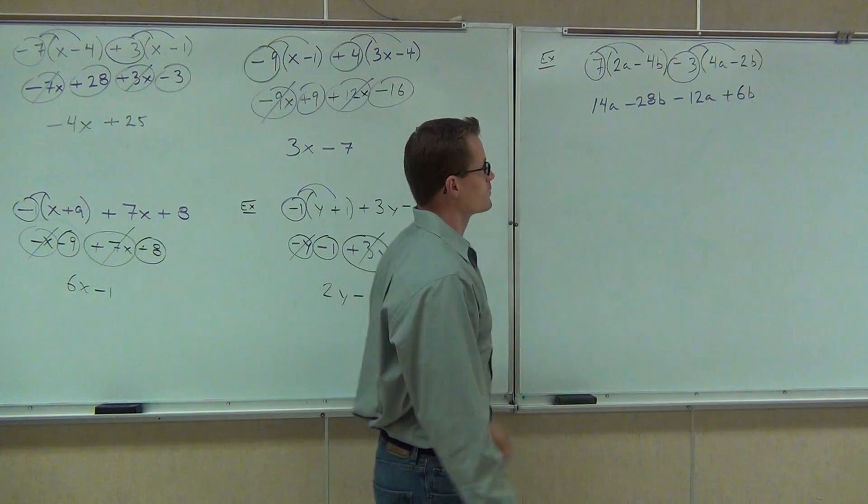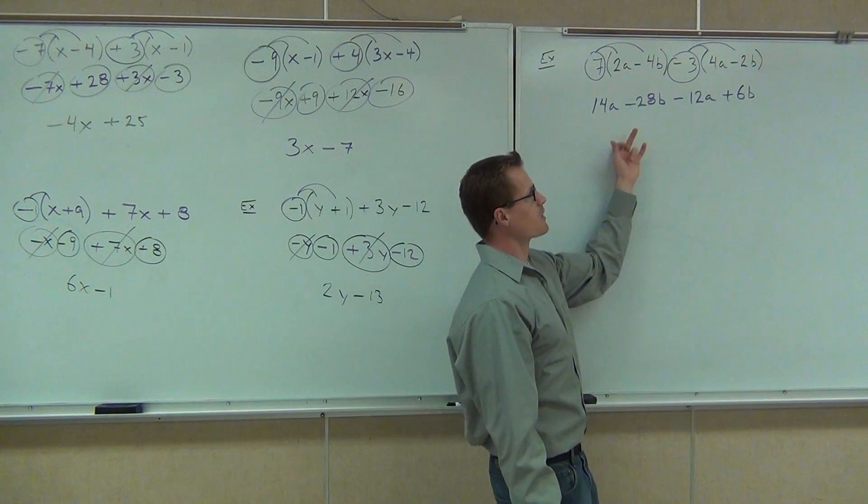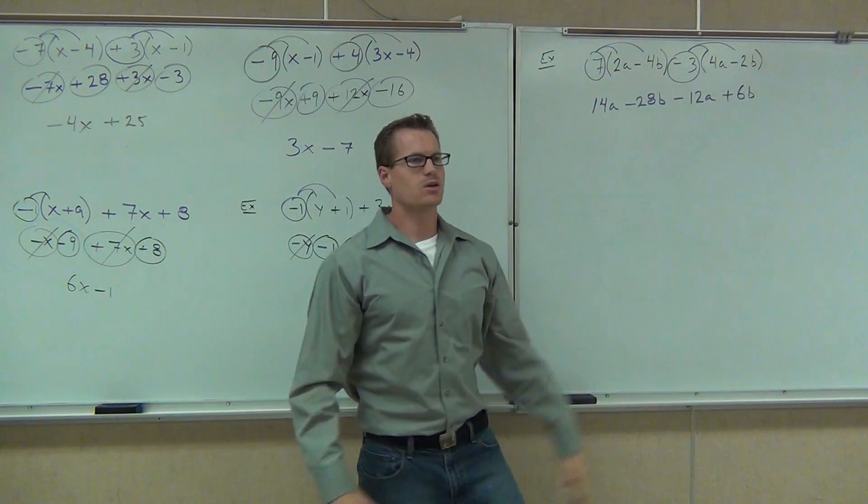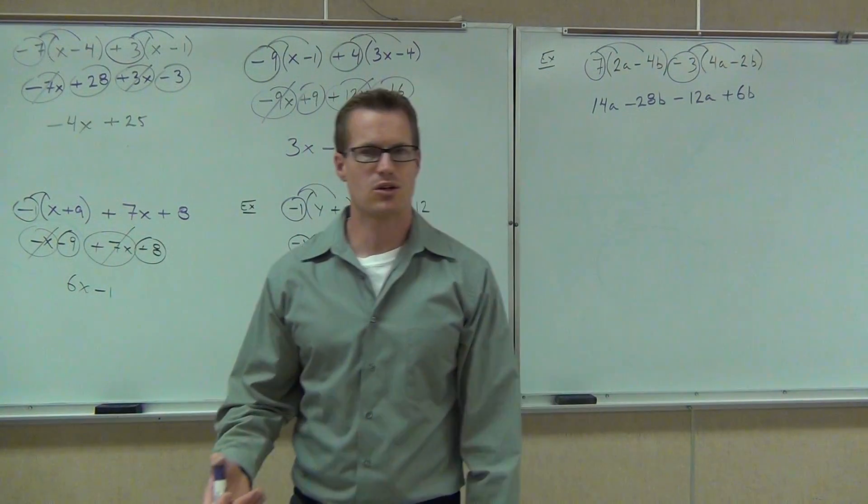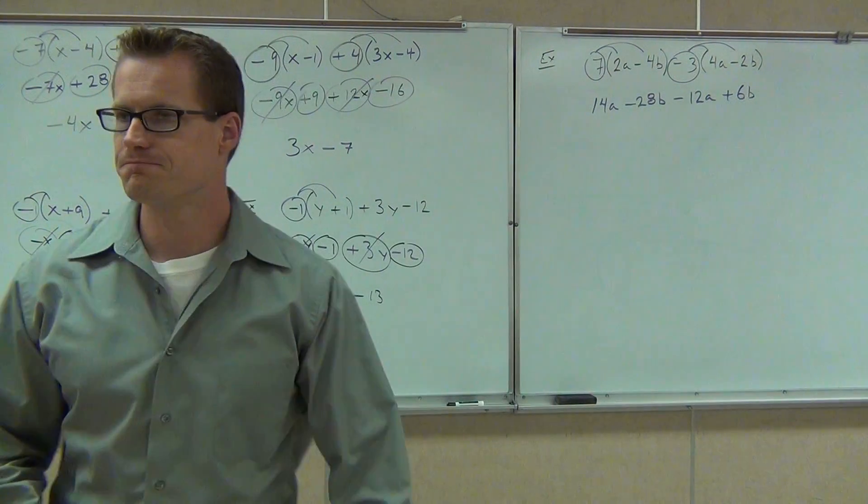So we have these signs correct. We've got our negative 12a, we've got our plus 6b. Hey, we're good to go for the rest of it. Let's just combine some like terms, do that on your own, and let's see what you get.